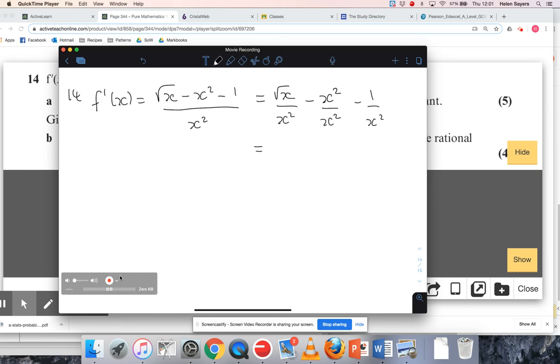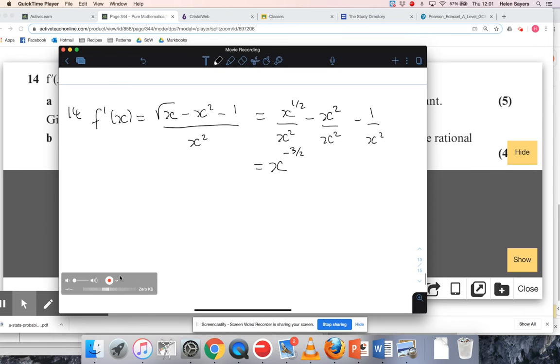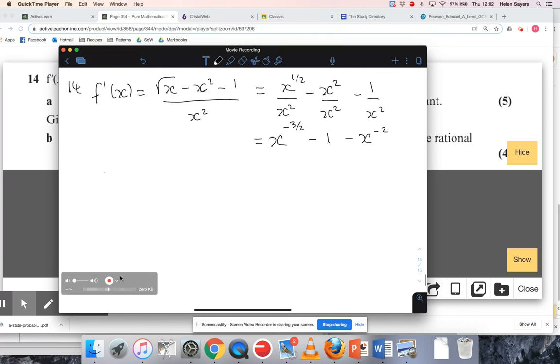Basically the three terms in the numerator all need to be cancelled through by x². So √x is x to the power of a half, and if I'm dividing, I'm just subtracting the powers. So a power of a half minus a power of two is a power of minus one and a half, or minus three over two. x² over x² is cancelled to one, and one over x² would be written as a negative power.